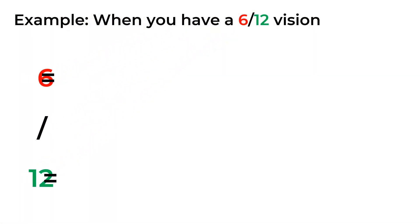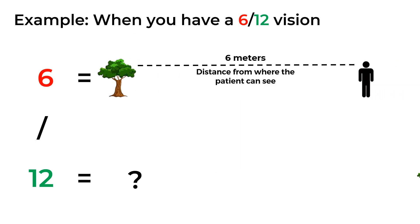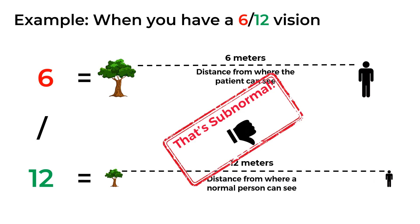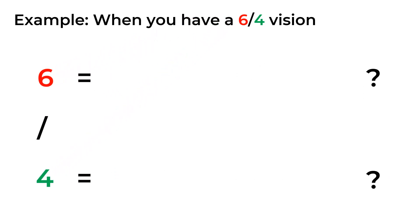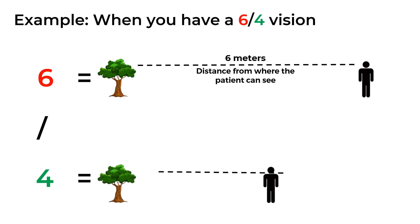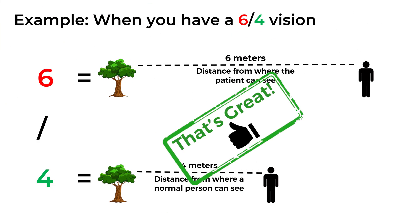Let's take an example: if your vision in the right eye is 6 by 12, it means the numerator 6 is what you can see at 6 meters, whereas a normal person can see the same object at 12 meters. So 6 by 12 represents less sight than 6 by 6. On the contrary, the eagle's vision was 20 by 4 — or in metric terms, 6 by 4 — meaning what the eagle sees at 6 meters, a normal human being can only see at 4 meters. That's why eagle's vision is better than human vision.